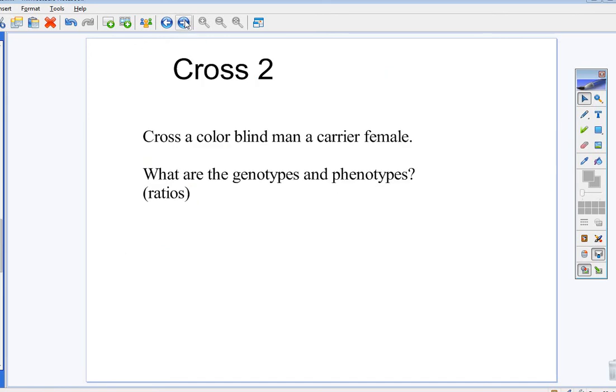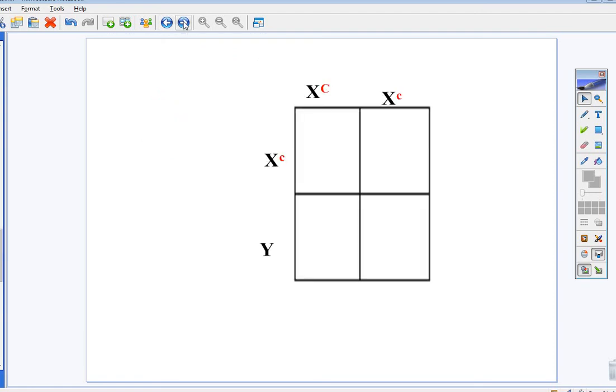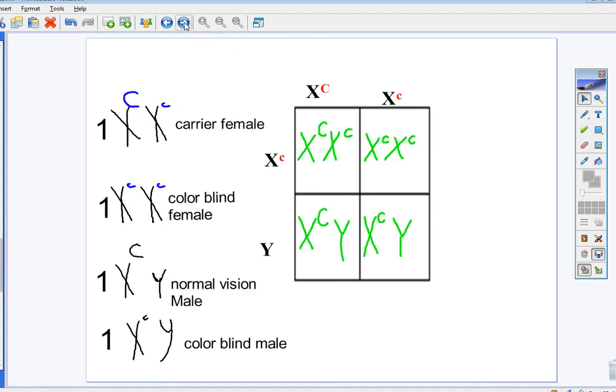Cross 2. Colorblind man, carrier female. Hopefully, you set it up like this. That's the little c. And here are your results. I should have said pause, but I didn't.